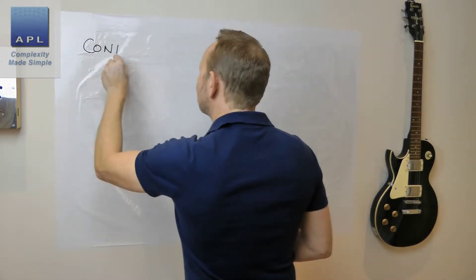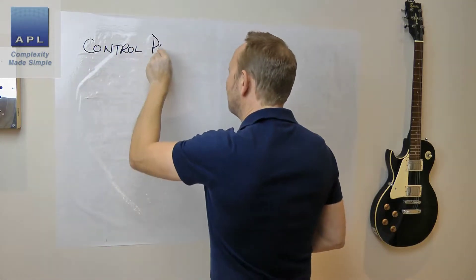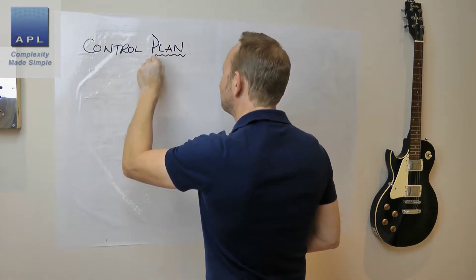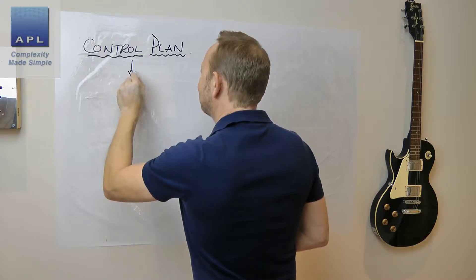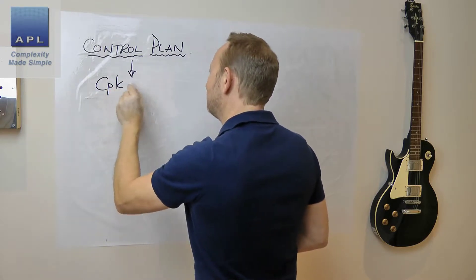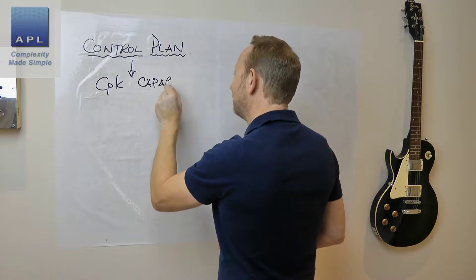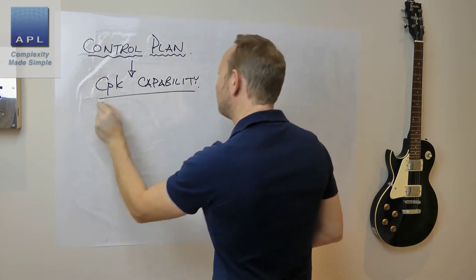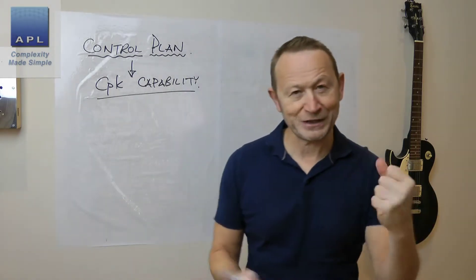We're going to have a look at control plans and what your control plan is trying to do. Basically you're trying to get your CPK — your process capability — to be under control, to be in a good place. That's what we're trying to do: get your process capability right.